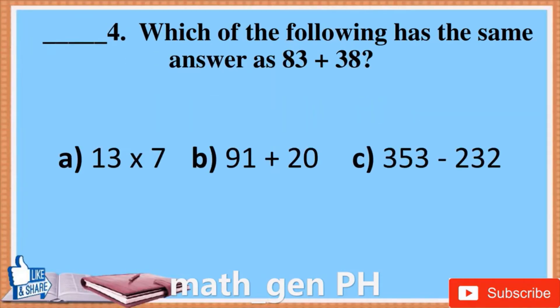Question 4: Which of the following has the same answer as 83 plus 38? A. 13 times 7, B. 91 plus 20, C. 353 minus 232.